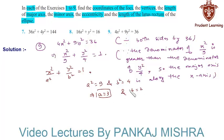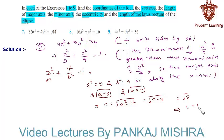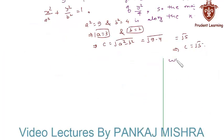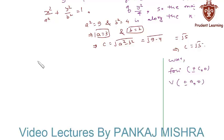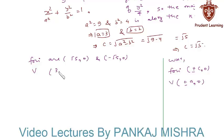And b = 2. Using the formula c = √(a² - b²), we have √(9 - 4) = √5, so c = √5. We know that the foci of this ellipse are at (±c, 0) and vertices are at (±a, 0). So foci are at (√5, 0) and (-√5, 0), and vertices are at (3, 0) and (-3, 0).